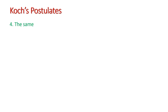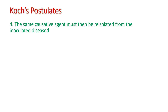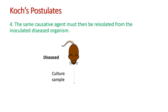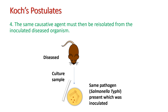According to the fourth postulate, the same causative agent must then be re-isolated from the inoculated diseased organism. It means if we take a sample of the same typhoid-infected organism and culture it, we should get isolated Salmonella typhi colonies again.